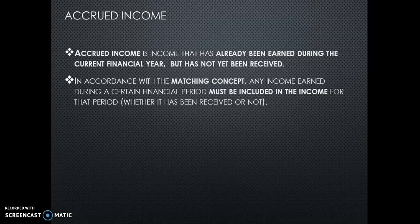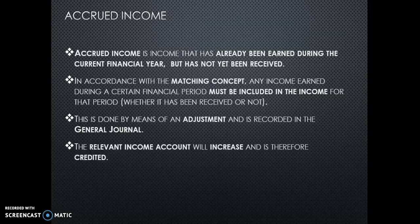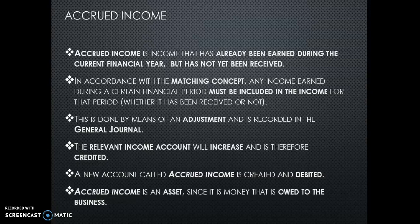So you do an adjustment in the general journal. The relevant income amount will increase, because even though you have not received the money, you have still earned that income. So income increases on the credit side. Then there must be a debit — a new account called accrued income is debited. This is the reversal of income received in advance. In this sense it is an asset, because they owe you the money. You've earned the income but they still need to pay you, so it is owed to you — so it is an asset.